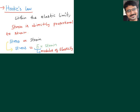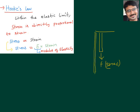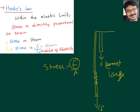Within elastic limit, stress is directly proportional to strain. If you apply small force, there is a small stretch. If you apply large force, it stretches more. Stress is force by area — if you apply more force, automatically more stress is applied per unit cross-sectional area. More stress gives more elongation, and since strain is change in length by original length, more stress means more strain.